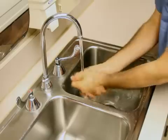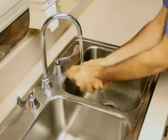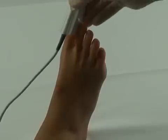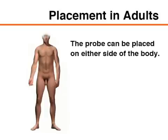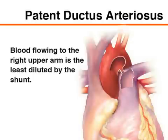It is important to adhere to standard precautions before any contact with patients. Hand washing is the single most effective strategy to prevent the spread of infections. The ideal site for placement of the pulse oximeter probe is one that is well perfused, relatively immobile, comfortable for the patient, and easily accessible. The earlobes and the fingers are commonly used sites. Feet, cheeks, nose, and tongue may be used in cases of low peripheral perfusion. In adults, the probe can be placed on either side of the body. In newborns, however, placement on the right upper arm is preferable because of the possibility of a patent ductus arteriosus. Blood flowing to the right upper arm is the least diluted by the shunt and is therefore the most oxygenated.